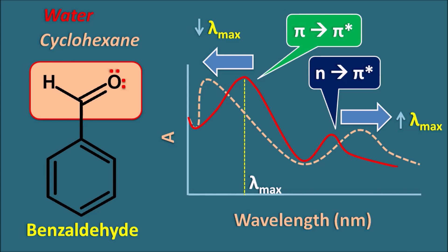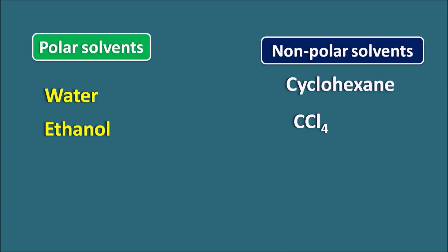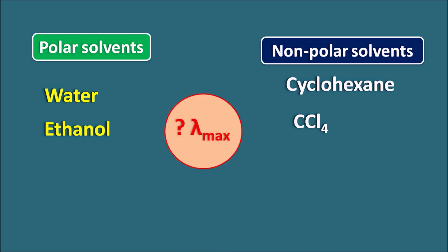So when we change the solvent from water to cyclohexane, the peak of the pi to pi* transition shifts to shorter wavelengths and the peak of the n to pi* transition shifts to longer wavelengths. Solvents may increase or decrease the lambda max, and it depends on the type of transition. Polar solvents like water and ethanol, and non-polar solvents like cyclohexane and carbon tetrachloride, can all be used in UV-visible spectroscopy, but they have variable effects on lambda max depending on the type of transition.